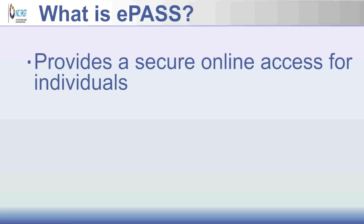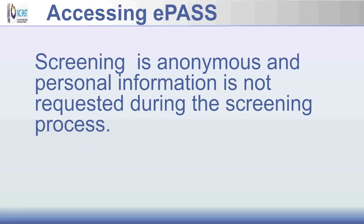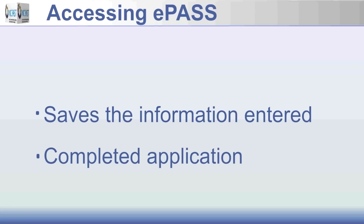ePASS provides secure online access for individuals to self-screen for Medicaid and NC Health Choice and apply for a range of NCDHHS benefits and service programs. Screening is anonymous and personal information identifying the user is not requested during the screening process. Application submission saves the information entered in the system and provides the user with a completed application once questions are answered.